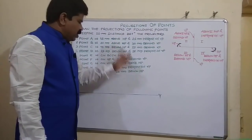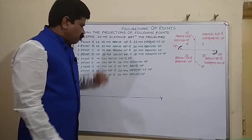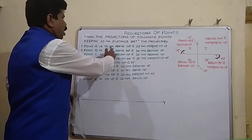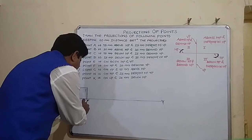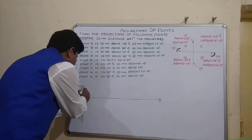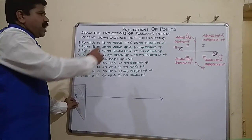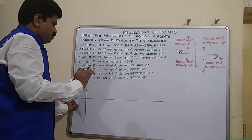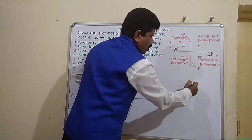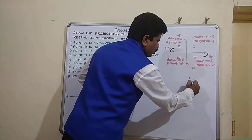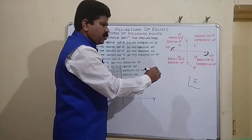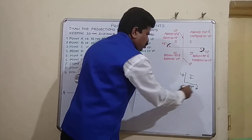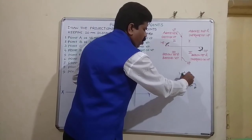I will draw the projection of this point with the help of the XY line. Above HP is 15 millimeter, so from XY I will take 15 distance above XY, and 25 millimeter in front of VP. This is the vertical plane and this is the horizontal plane, so HP is to be rotated clockwise so as to open this quadrant.